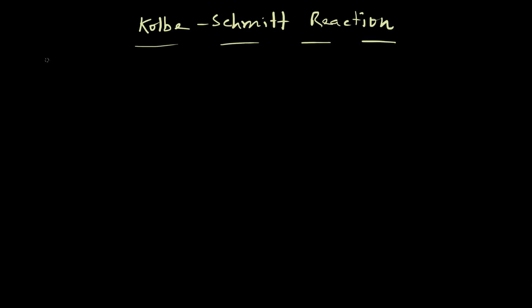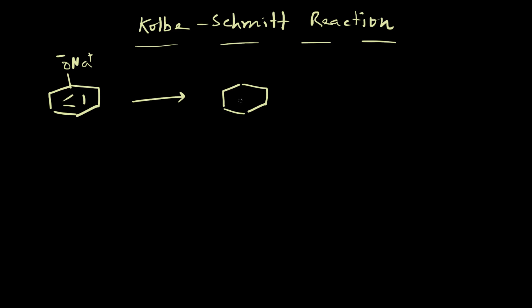The Kolbe-Schmidt Reaction is a reaction generally used to convert sodium phenoxide derivatives into their corresponding carboxylic acid salts, which can later be converted to their corresponding carboxylic acids by acid workup.